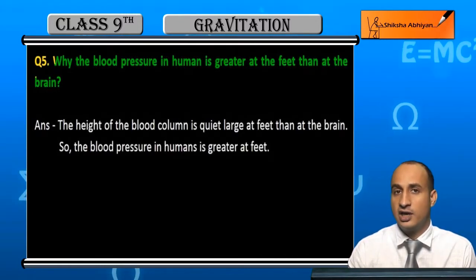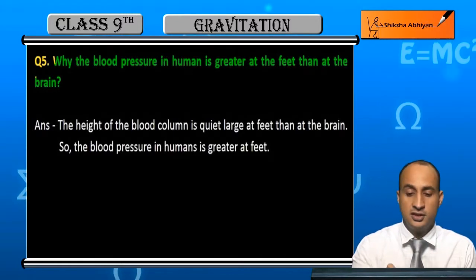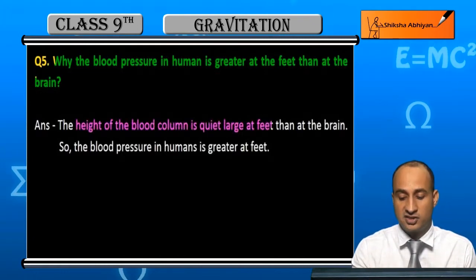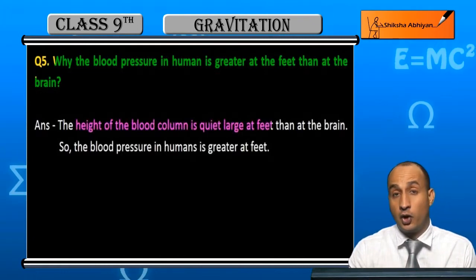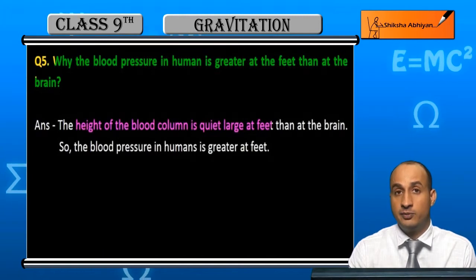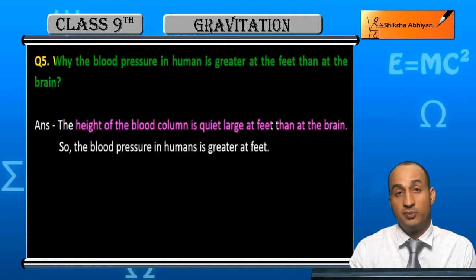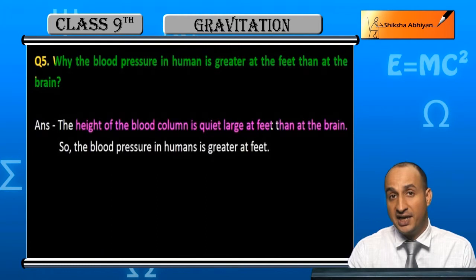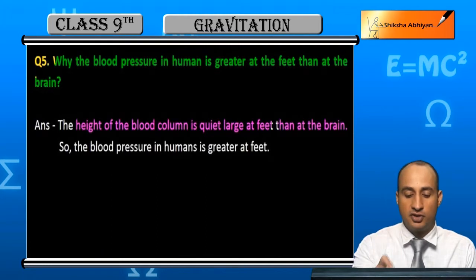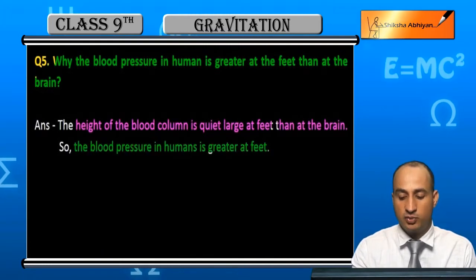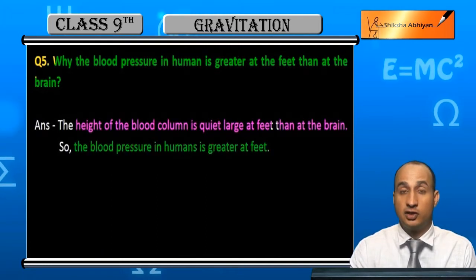The reason is that the height of the blood column is quite large at the feet as compared to the brain, and because of this, blood pressure in humans is greater at the feet.